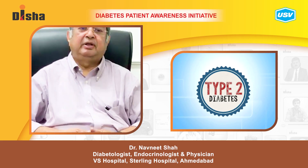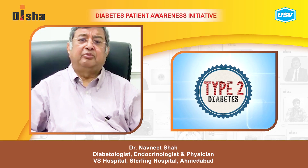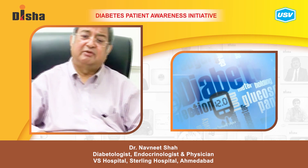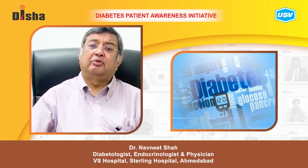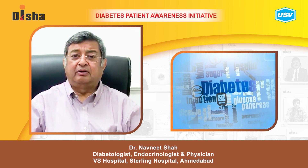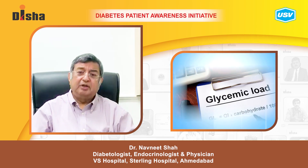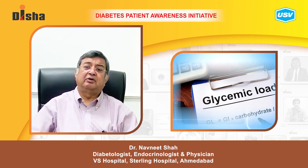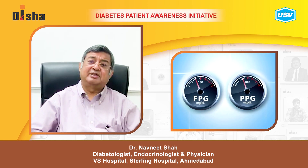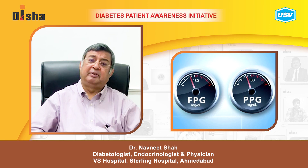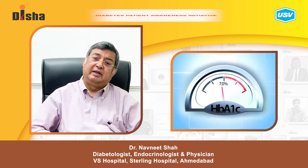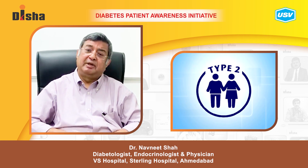Once you diagnose type 2 diabetes, or diabetes as a whole, we must have a pattern to monitor the disease progress and the control of diabetes. For glycemic control in type 2 diabetes, we may do fasting and postprandial blood sugar every month, and HbA1c once every 3 months.